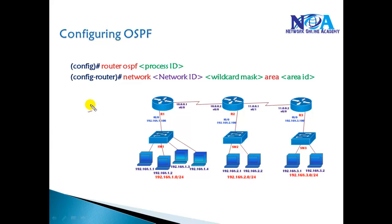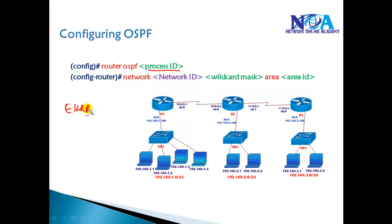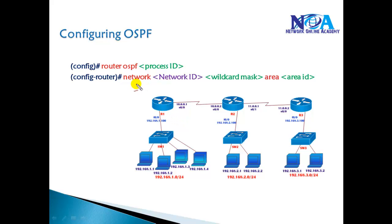The process ID is locally significant, which means you can use the same number on all routers or different numbers on different routers — it doesn't matter. This is different from EIGRP, where the AS number must match on all routers. In OSPF, the process ID only identifies the OSPF instance running on a single router and has nothing to do with the number given on remote routers.